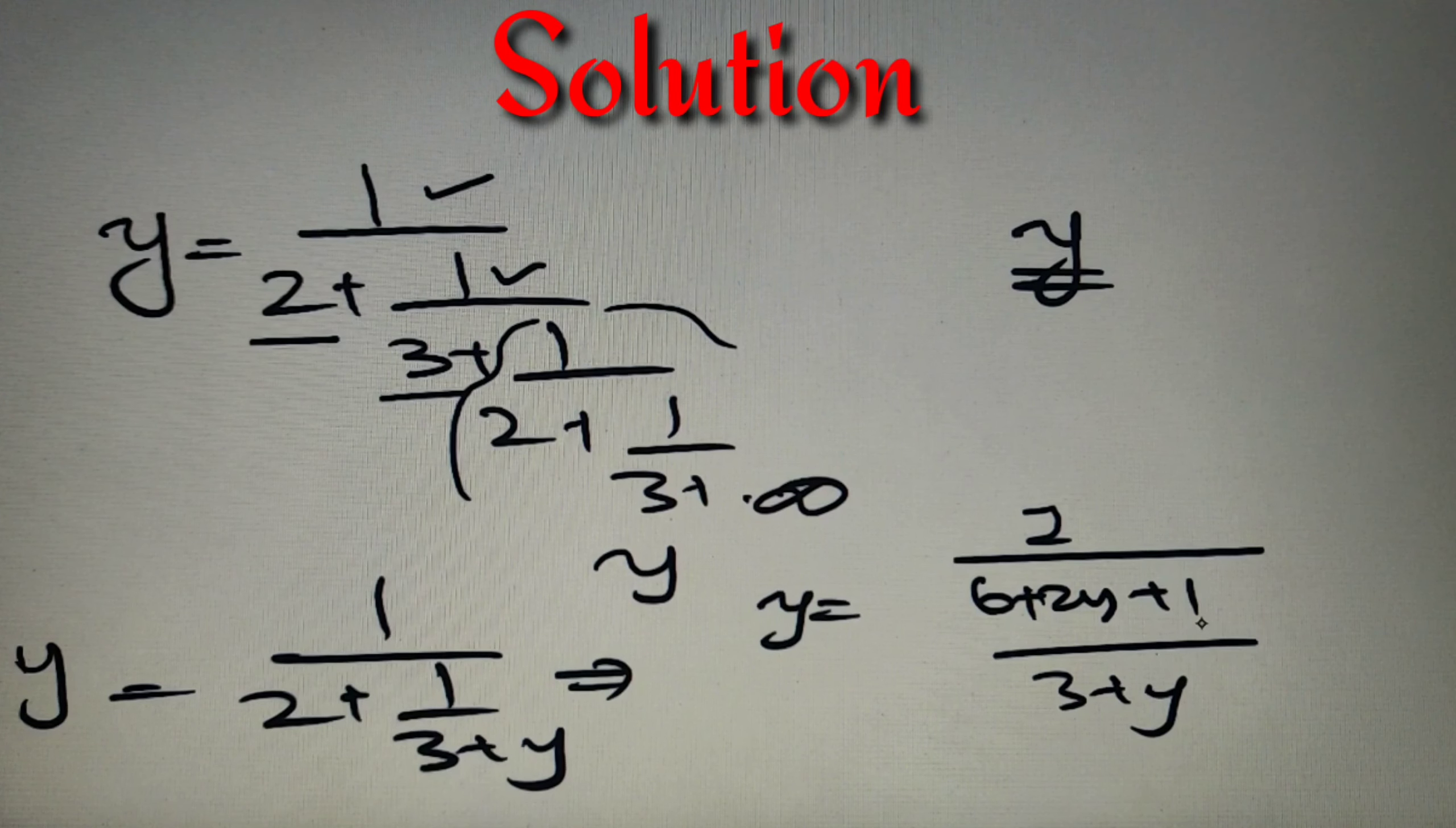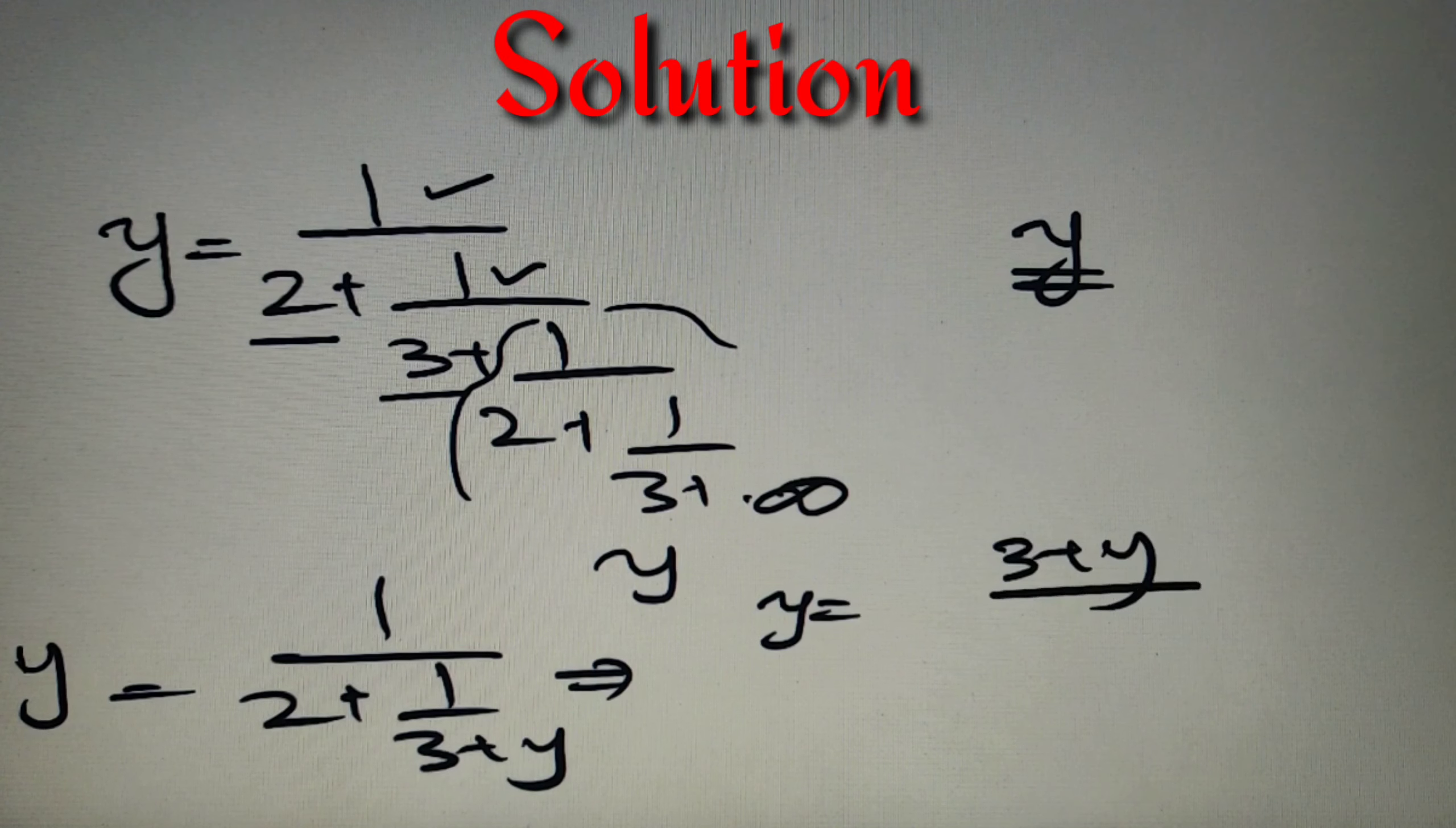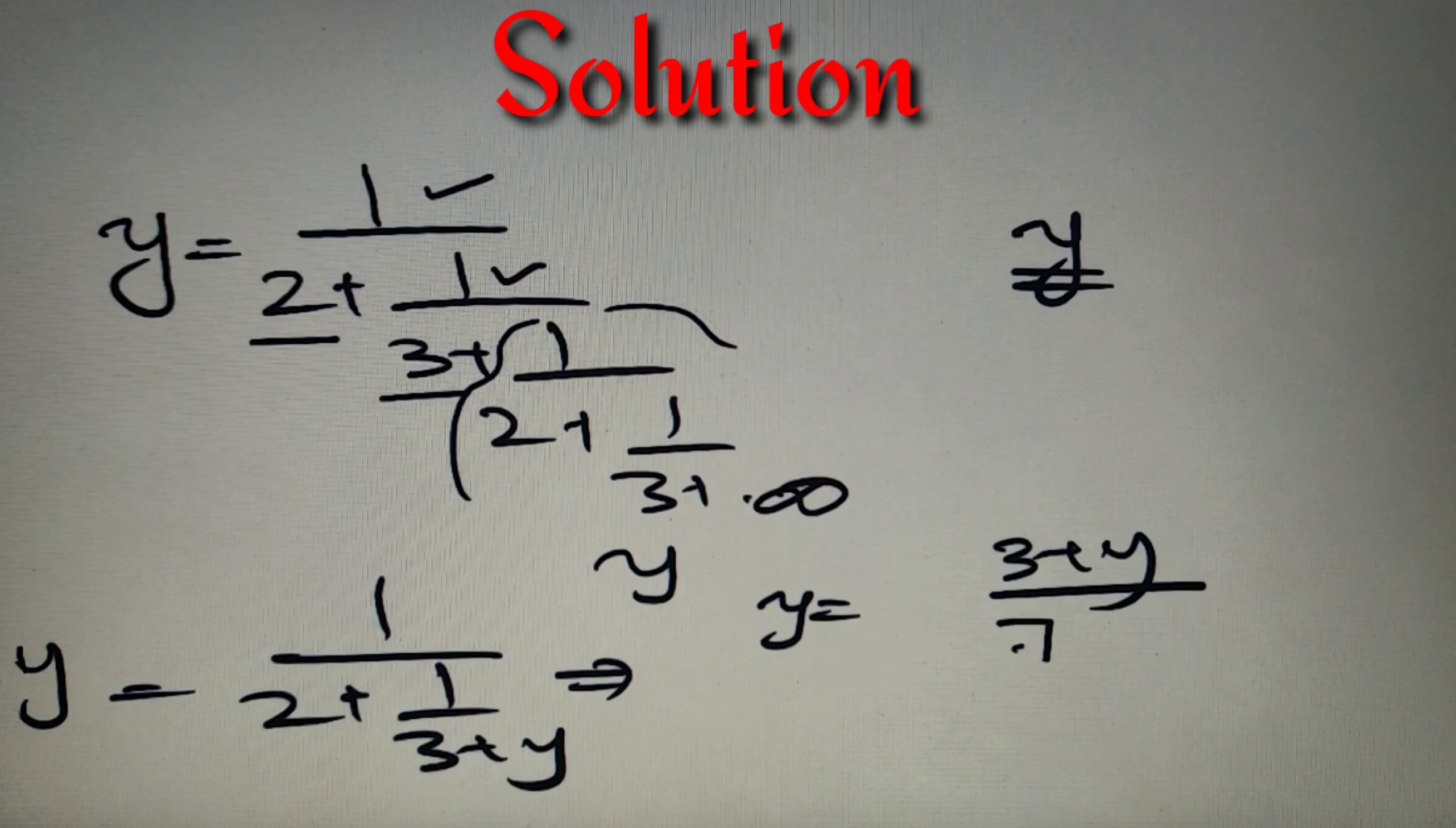Now whenever we have 1 by a by b, then it is equivalent as b by a. So we can replace this as 3 plus y over 6 plus 2y plus 1, which can be written as 3 plus y over 7 plus 2y.